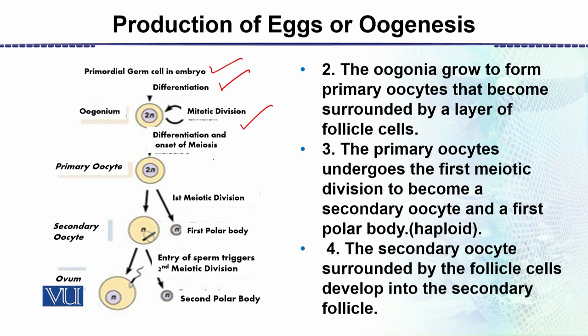We need to see how these diploid cells are transformed into haploid cells. When haploid cells are formed, that means the number of chromosomes is reduced to half. This is the onset of meiosis — the start of meiosis — and this results in the primary oocyte, which is the early stage of the egg. Then it undergoes the process of meiosis, which has two stages: meiosis I and meiosis II. The result of meiosis I is the secondary oocyte and a polar body.